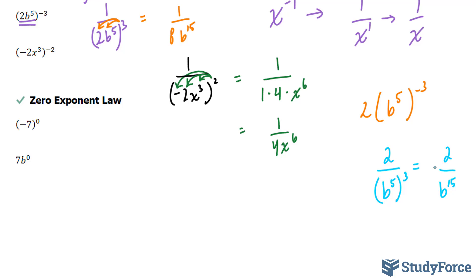Our last rule is the zero exponent law: anything to the power of 0 is equal to 1. So negative 7 to the power of 0 gives us 1. In the case of 7b to the power of 0, note that the 0 belongs exclusively to the b, so b to the power of 0 is 1, and 7 times 1 equals simply 7.